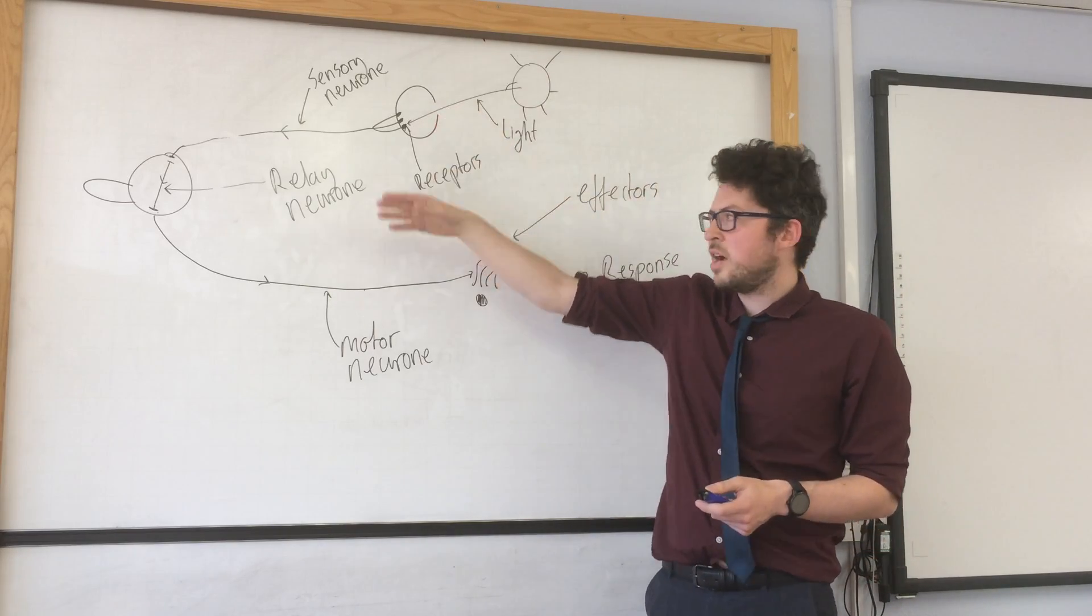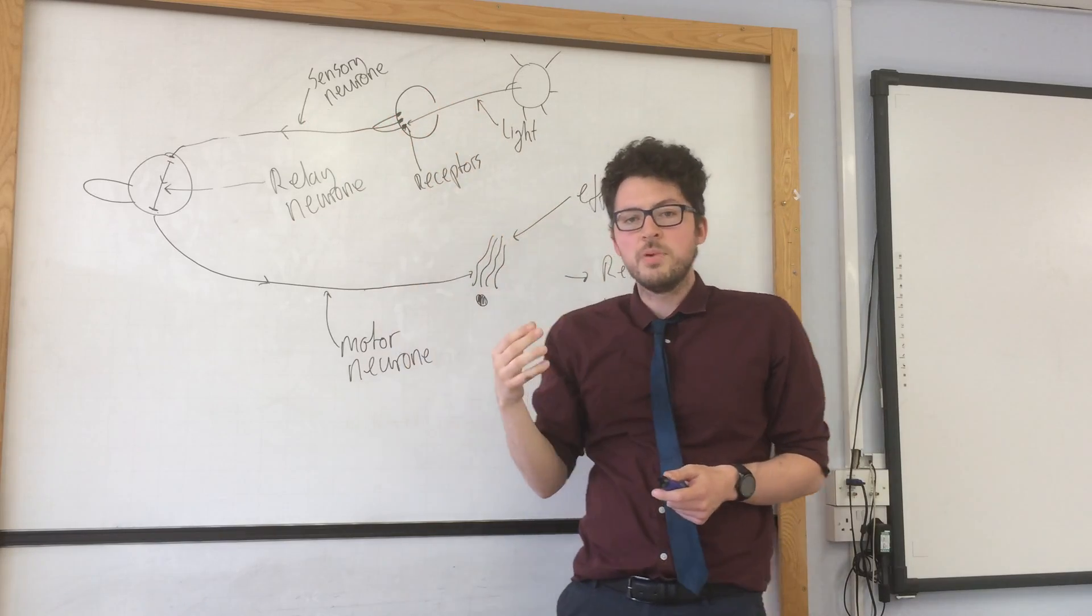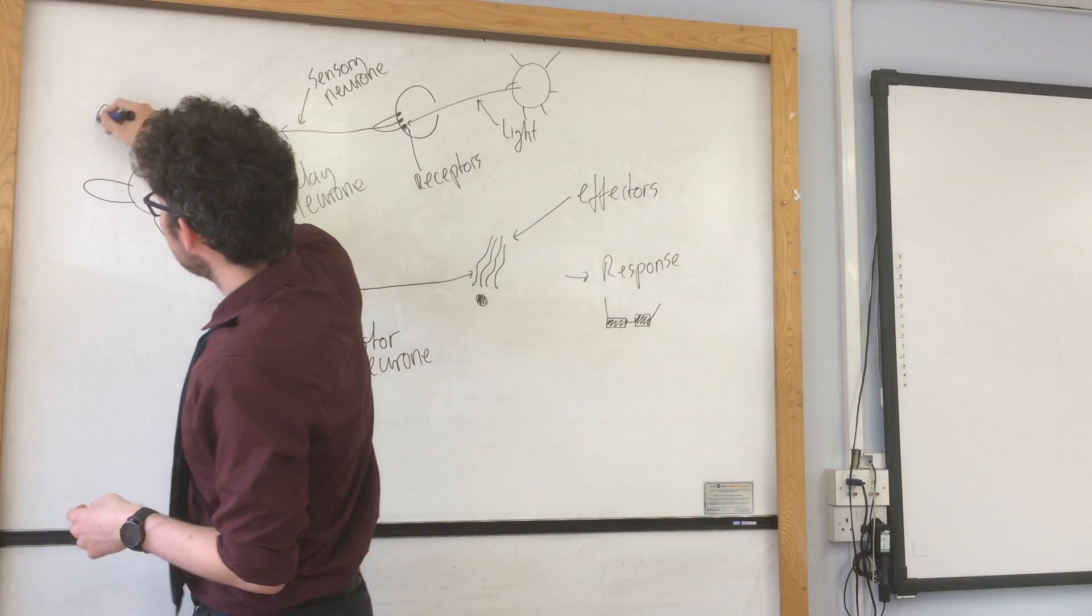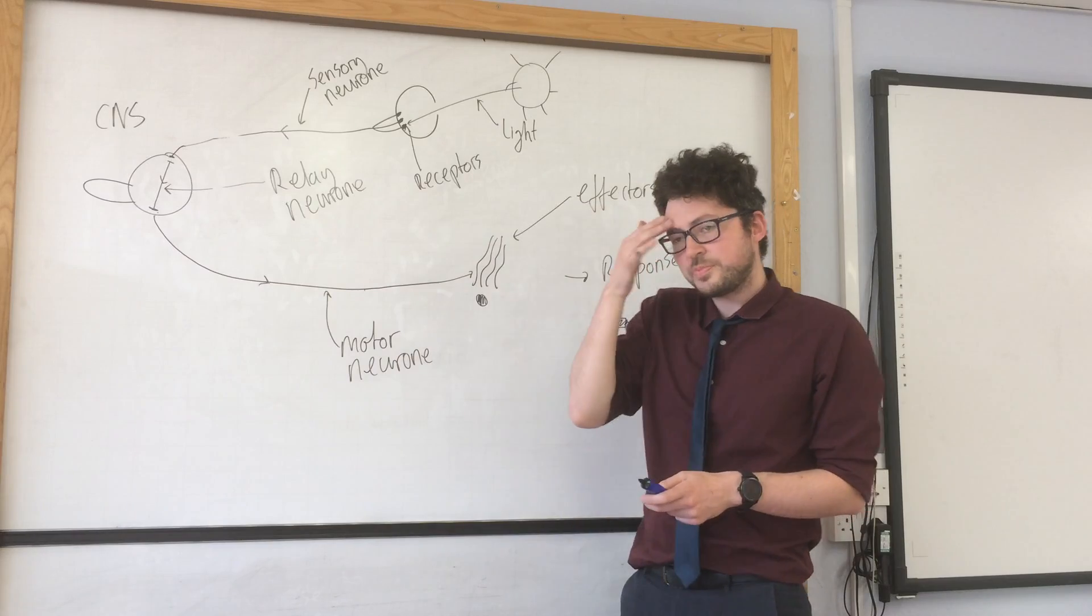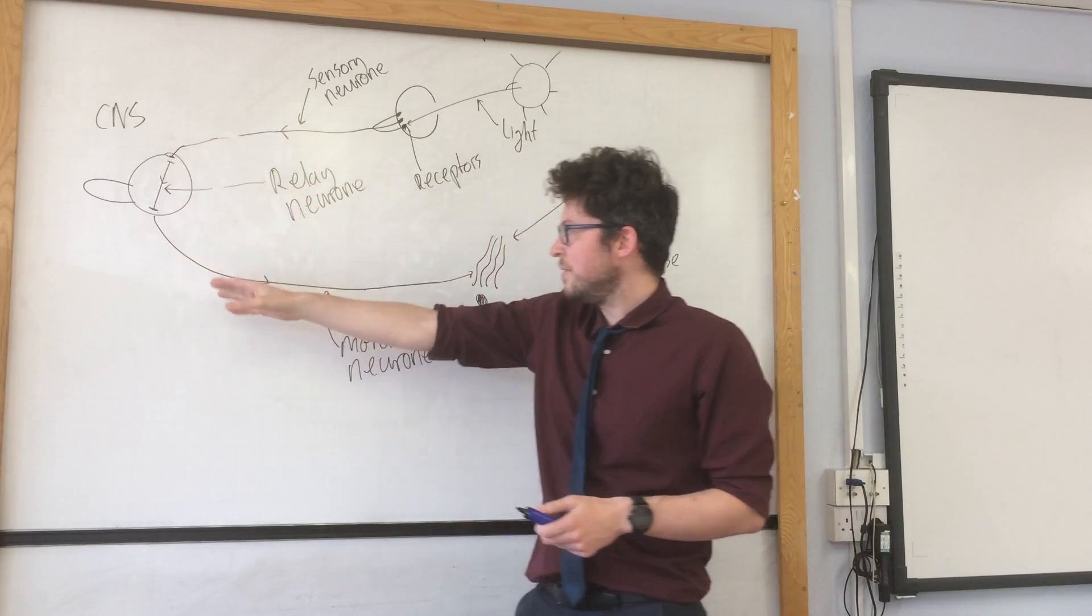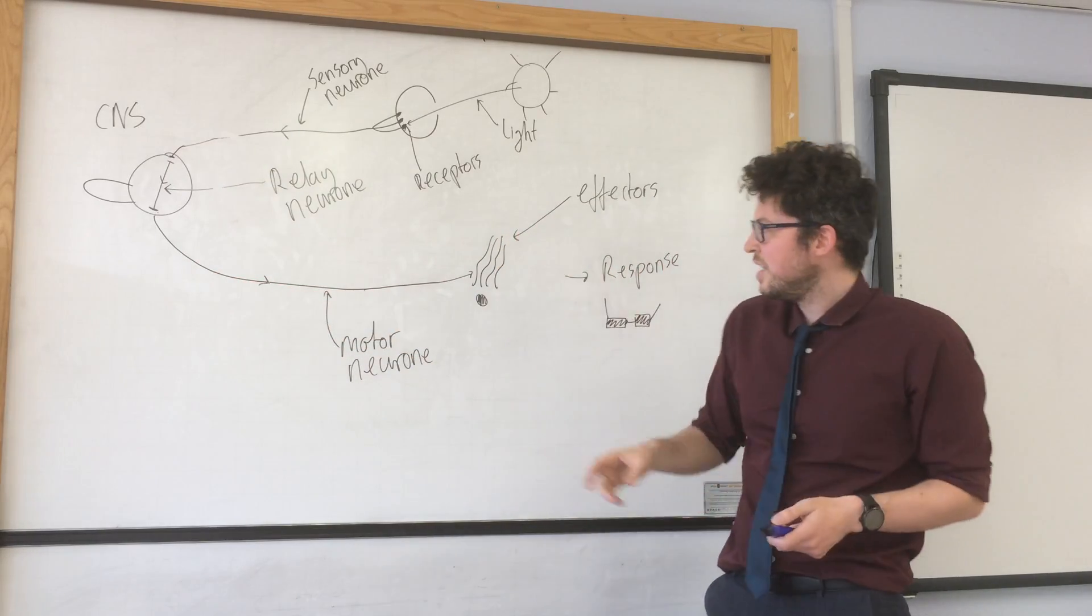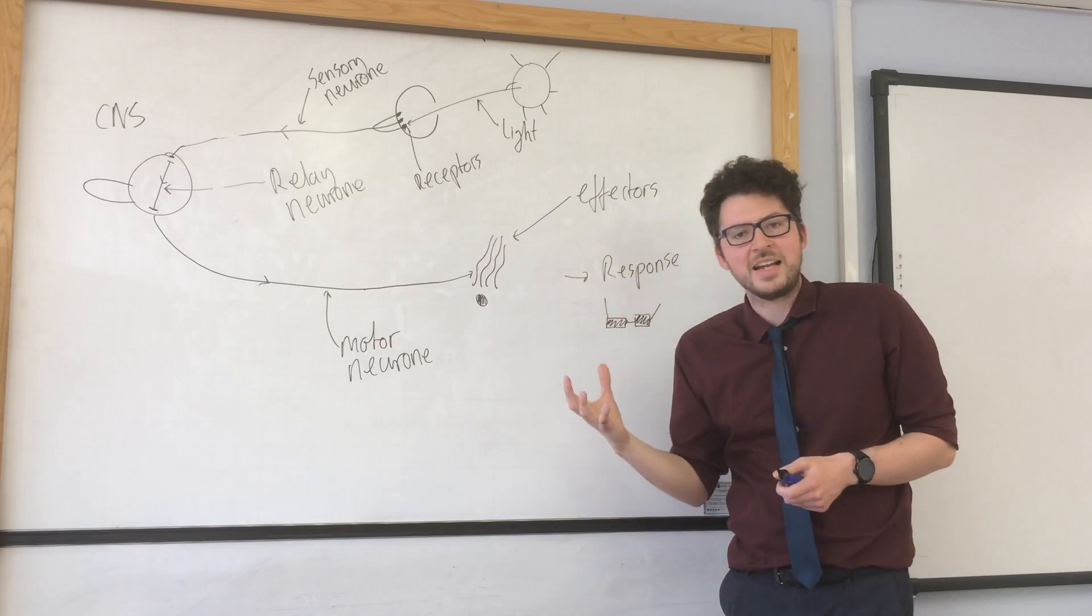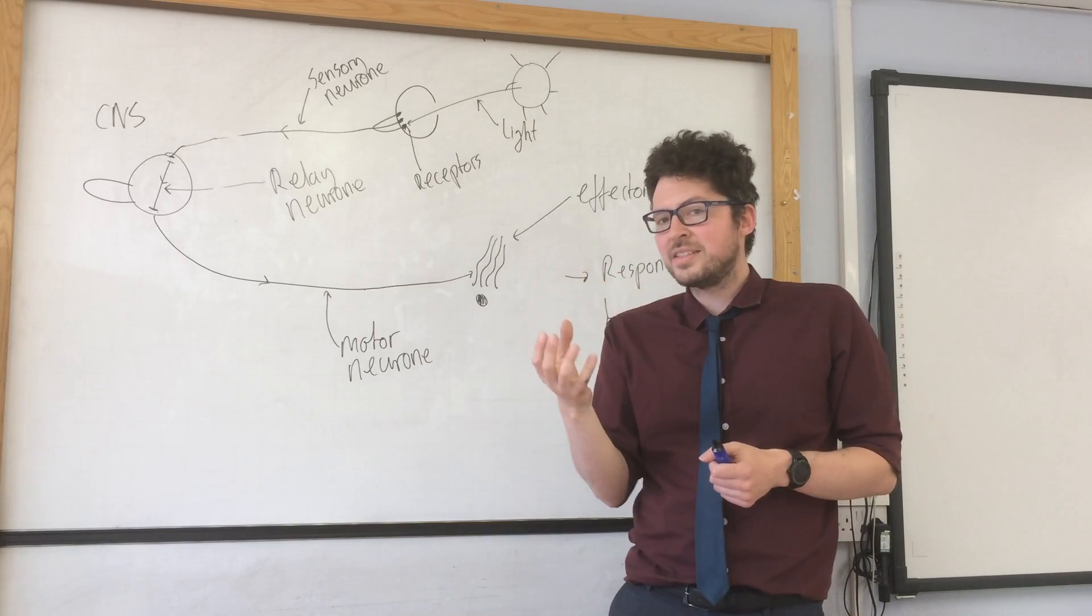Stimulus. Detected by a receptor. Carries the impulse, by an electrical impulse, to the brain and spinal cord, or the central nervous system. Within there it gets coordinated by the relay neuron. And then transmitted to the motor neuron, which means movement, to a muscle or gland, which brings about an effect. The muscle will allow us to move. A gland will release hormones. Now that is how we coordinate a response.